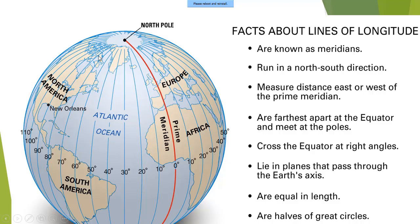Longitudes are also known as meridians. They are the vertical lines on the globe or Earth's surface. The main purpose and application of longitude is to determine the location as well as the time on the Earth's surface. To avoid confusion, the whole map of the world is divided into two parts: the eastern hemisphere and the western hemisphere.